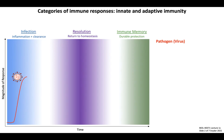Infection and inflammation in blue on the left, where pathogens are detected, immune cells become activated, and effector mechanisms are engaged. There's a resolution phase in purple in the middle, where anti-inflammatory signaling is engaged to promote a return to cellular and organismal homeostasis. And then immune memory in green on the right, where long-lived memory cells are maintained to prevent future reinfection. The x-axis shows these phases separated temporally, while the y-axis serves as a generic measure of the magnitude of each type of response.